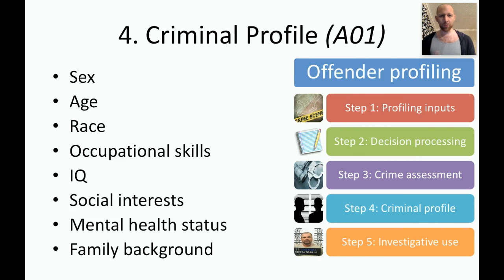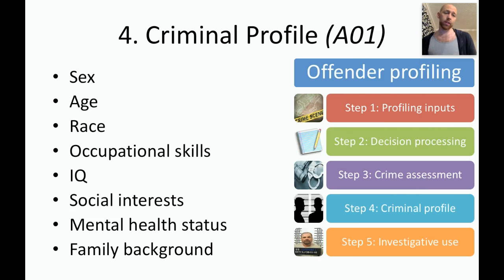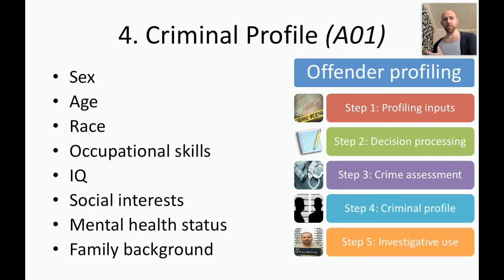At step four we develop the criminal profile — this is the one where the profiler sits down and tells you he's a white male between this age and that age. Some of the characteristics we try to work out from criminal profiling are things like the sex of the perpetrator, the age, the race, occupational skills, IQ, social interests, mental health, and family background. And if you remember the mad bomber from last lesson, these sometimes small clues can give us an indication of race, age, and so forth.